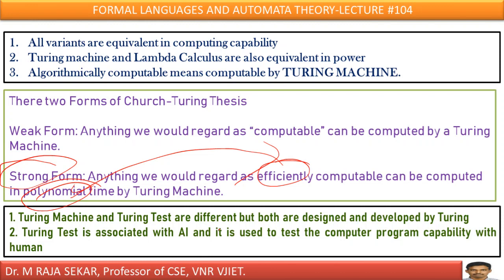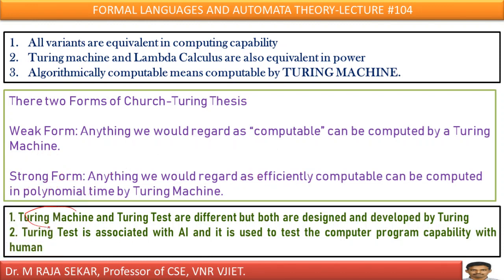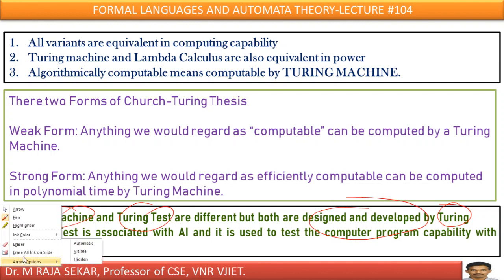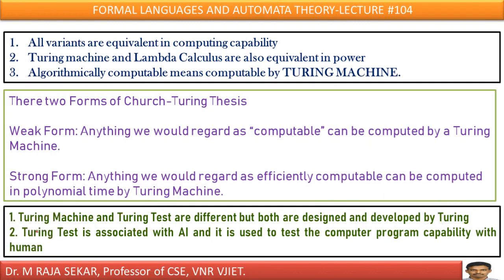Turing machine and Turing test are different concepts. You might have heard of both — they are different, but the similarity between them is that both were designed by Alan Turing. The Turing test is used in artificial intelligence to compare the programming capability of a computer with that of humans.